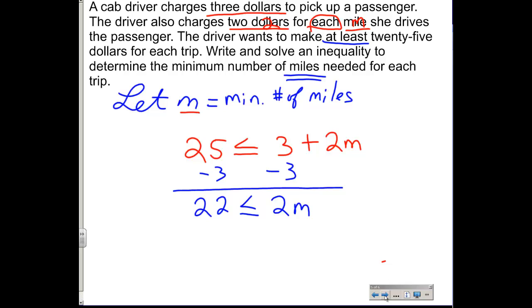And then to get rid of the 2, we're going to divide by 2, divide by 2. And that will give us m is going to be greater than or equal to 11. So the minimum number of miles is the amount that's equal to it. So we have to drive a minimum of 11 miles to make $25 per trip.